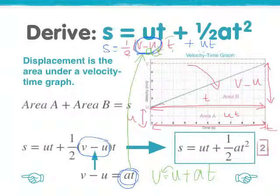And you're ending up with half at times t plus ut. Multiply these two t's together, and we end up with s equals ut plus half at squared. And that's your second formula.